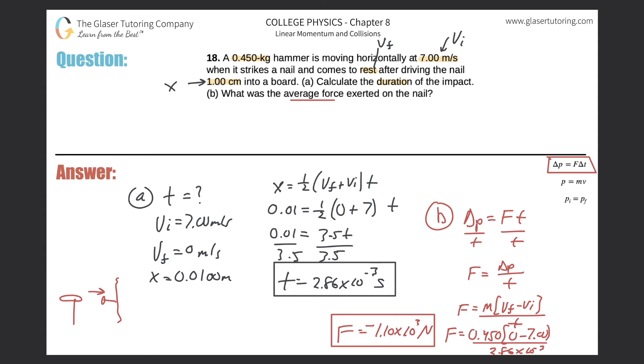The hammer changes its momentum. There's a force that's going to change its momentum. It was traveling at 7 meters per second and then it's at rest as soon as it hammers the nail in. So the force that changes that momentum is pointing in the opposite direction. That's the force that the nail exerts on the hammer. But remember, according to Newton's third law, for every force there's an equal but opposite force. If the force that the nail exerts on the hammer is negative 1.1 times 10 to the 3 newtons, then the force that the hammer exerts on the nail is positive 1.1 times 10 to the 3 newtons.